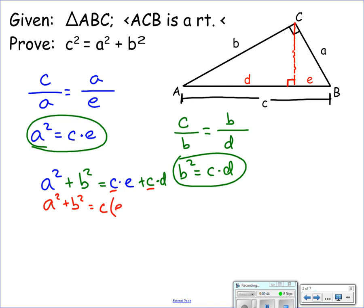What's E plus D though? The segment length of E plus the segment length of D is equal to C. E plus D is equal to the whole hypotenuse which is C. C times C is C squared. So A squared plus B squared equals C squared.